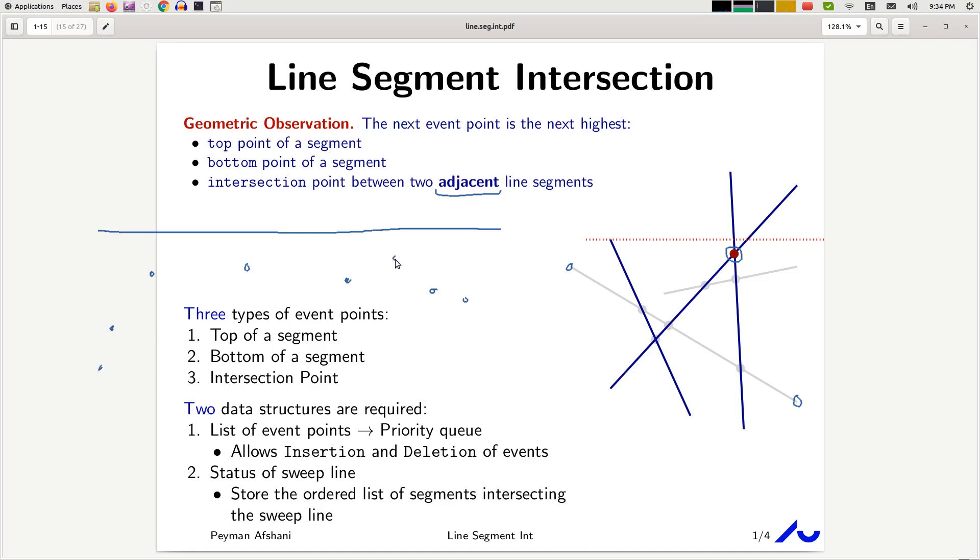And let's say you have some other event points that are end segments. So these are, let's say, end points, and these are all the intersection points.